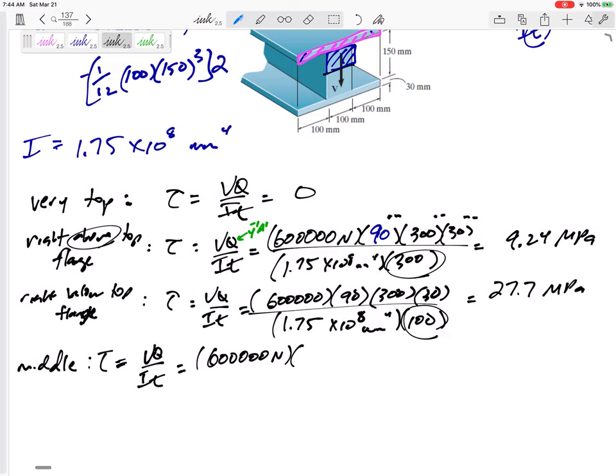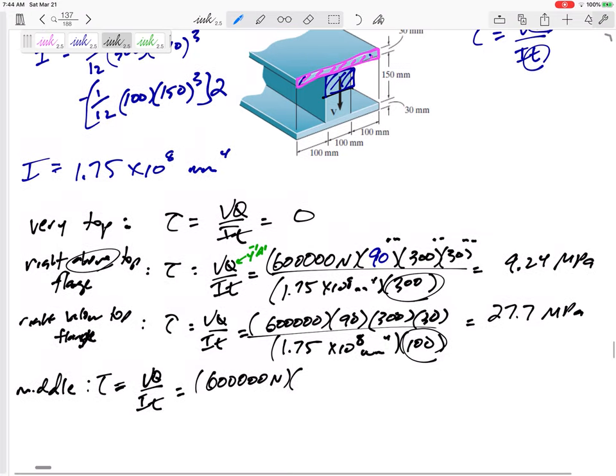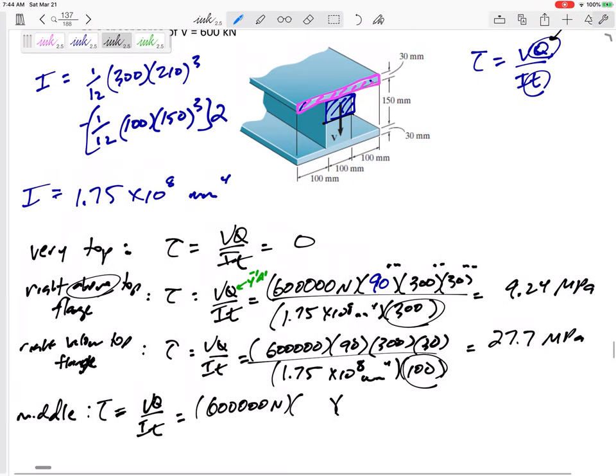Y bar prime A prime of the blue, so let me do the A prime of the blue. It's 100 by 75, 100 by 75, and then the y bar prime would be from the neutral axis to the centroid of that would be 37.5. Alright, and then the pink